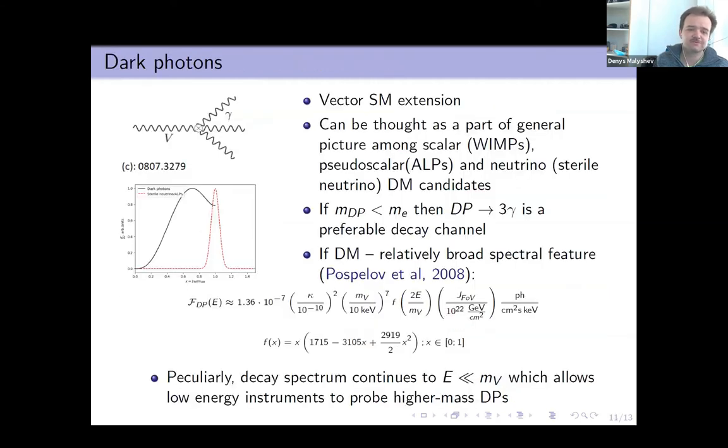Next and last dark matter candidate which I would like to stop on is dark photon. It can be thought as a vector generalization or extension of the standard model. If the mass of dark photon is less than electron mass, preferably the channel is to three photons. In this case, we do not have a narrow spectral feature like for sterile neutrinos, but instead we have a broad spectral feature. Particularly, if we can observe just part of the spectral feature, it will look like for us like an object with very hard spectrum. Because of this, we can use even low energy instrument to probe higher mass dark photons.